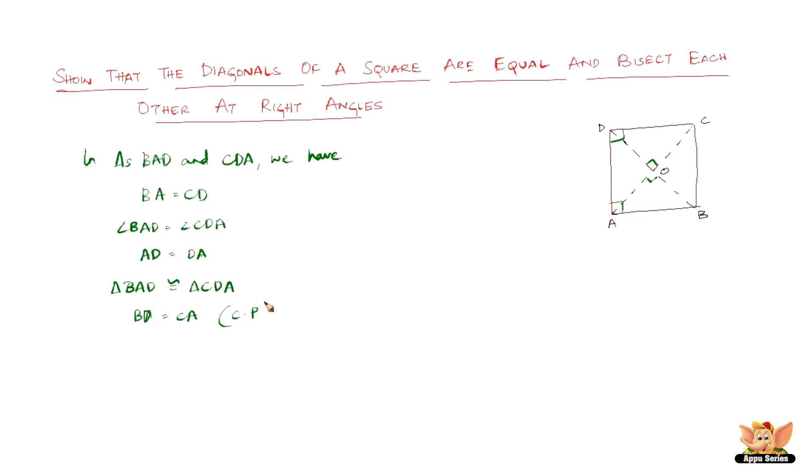Reason being corresponding parts of congruent triangles are equal. Now since every square is a parallelogram and we also know that the diagonals of a parallelogram bisect each other, so therefore we have OA equals OC and OB equals OD.